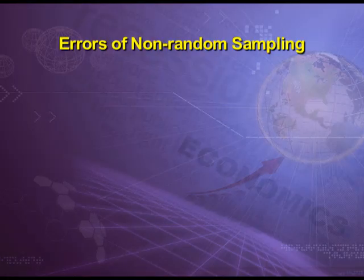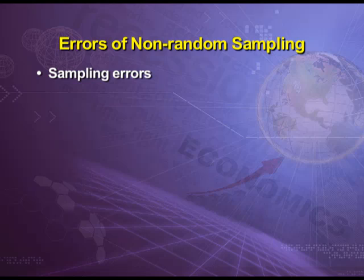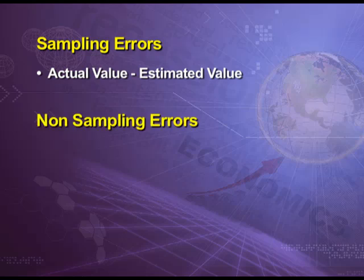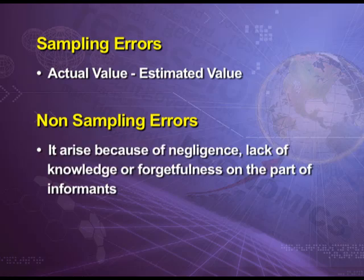Data can be collected either by census method or by sample method. There are two kinds of errors which may appear while collecting data: sampling error and non-sampling error. Sampling error occurs because there is a difference between the actual value and the estimated value. Non-sampling error arises because of negligence, lack of knowledge, or forgetfulness on the part of informants.